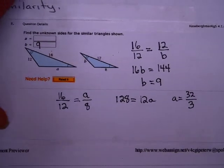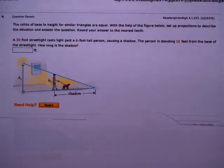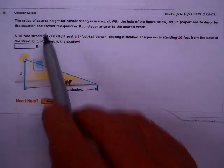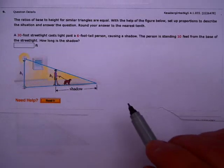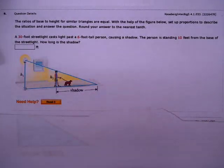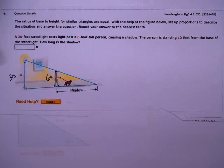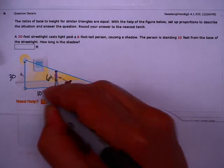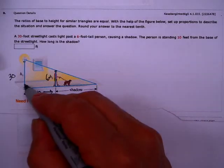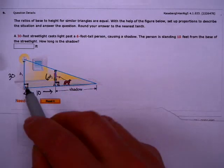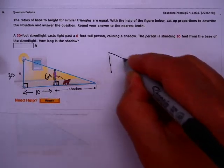Let's take a look at another example on similarity. The ratios of the base to height for similar triangles are equal. With the help of the figure below, set up proportions to describe the situation and answer the question. Round your answer to the nearest tenth. A 30-foot searchlight, so this is 30 feet, casts a shadow 6-foot tall person. So this is 6 feet tall. The person is standing 10 feet from the base of the streetlight. So this is 10 feet. How long is the shadow? You'll notice here that we have two triangles. If we assume the person is standing straight up and that the streetlight is straight up, these are both right angles. And both triangles share this angle.